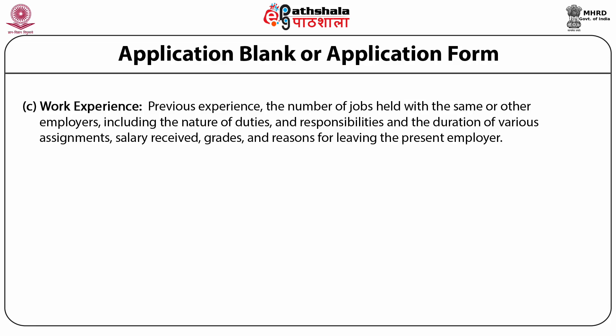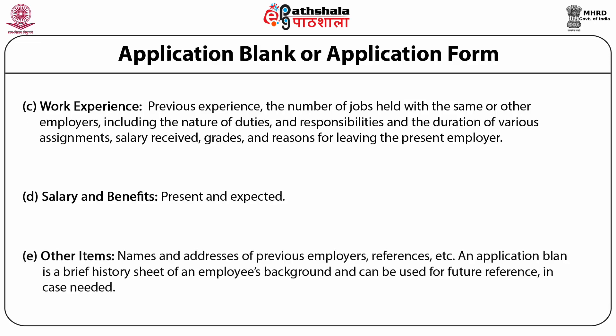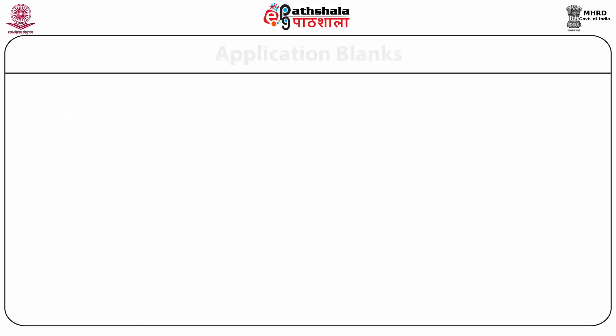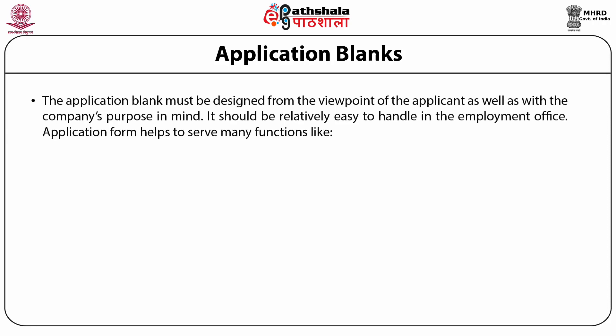A fourth section of the application blank can ask about salary and benefits — what you are getting from your present employer and what is expected from this institution. We can also include other items like name and address of previous employer and references. An application blank is a brief history sheet of an employee's background and can be used for further reference. The application blank must be designed from the viewpoint of the applicant as well as with the company's purpose in mind, and should be relatively easy to handle in the employment office.